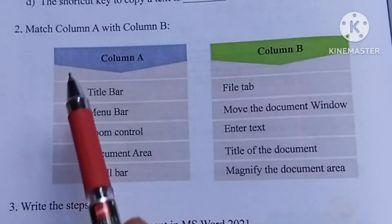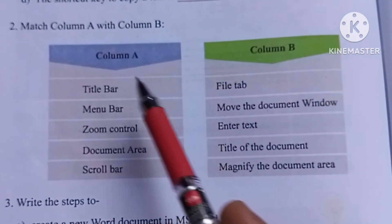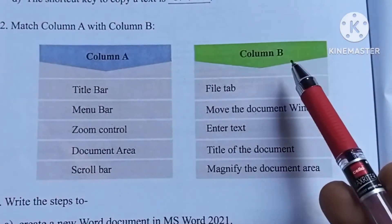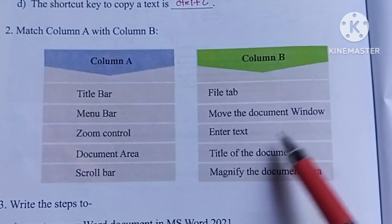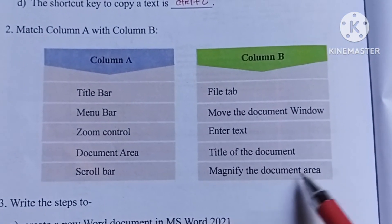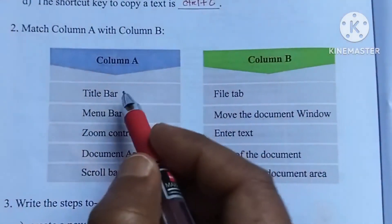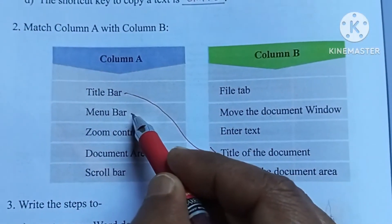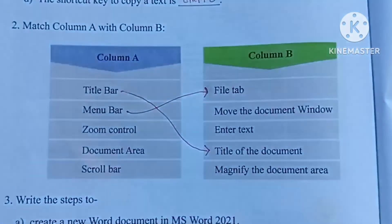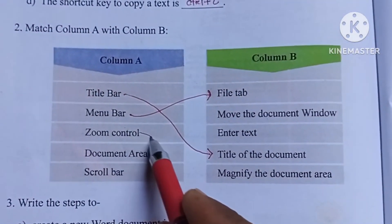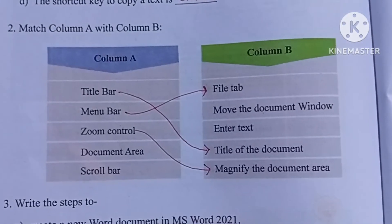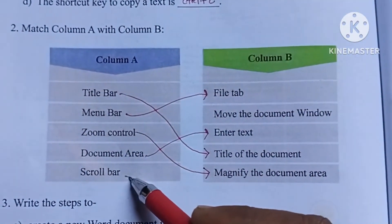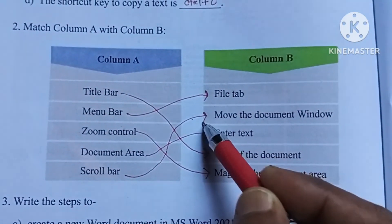Question number 2: match column A with column B. In column A the options are: title bar, menu bar, zoom control, document area, and scroll bar. In column B the options are: file tab, move the document window, enter text, title of the document, and magnify the document area. So: title bar matches title of the document; menu bar matches file tab; zoom control matches magnify the document area; document area is for enter text; and scroll bar is for move the document window.